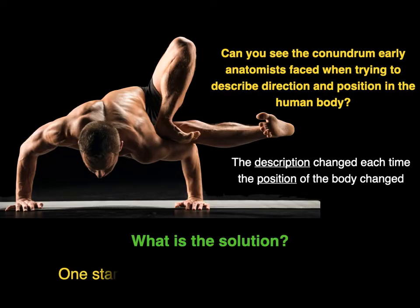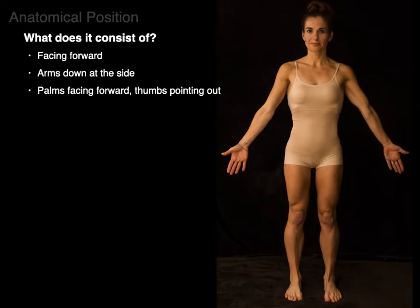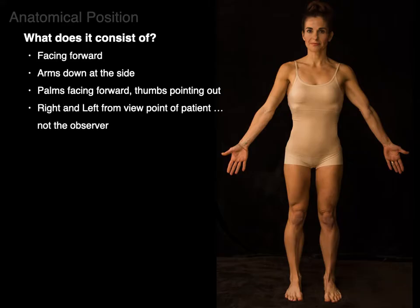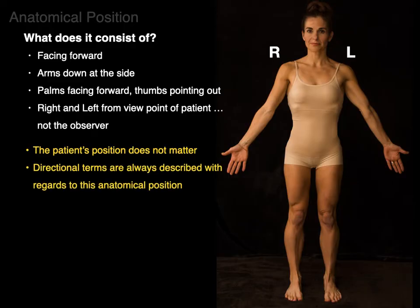What is the solution? One standard position. We call it the anatomical position. What does it consist of? As this photograph shows, the patient is facing forward, arms down at the side, palms facing forward with the thumbs pointing out, and the radius and ulna are parallel to each other. The right and left are from the viewpoint of the patient, not the observer. The patient's position does not matter. The directional terms are always described with regards to this anatomical position.